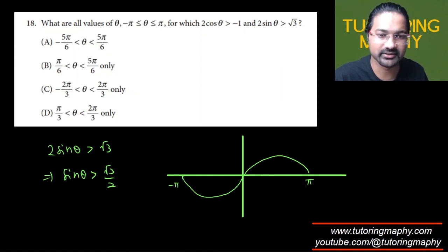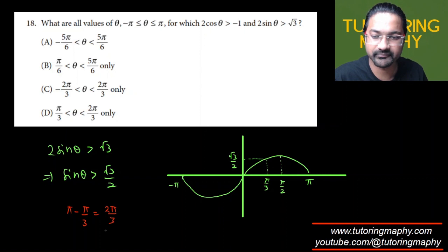60 degree. First angle is 60, which means that 60 is somewhere around this pi over 3 because this is pi over 2. And another angle at which it is root 3 over 2 is in quadrant 2, and the quadrant 2 angle is pi minus pi over 3, which is 2 pi over 3, and 2 pi over 3 is right here.